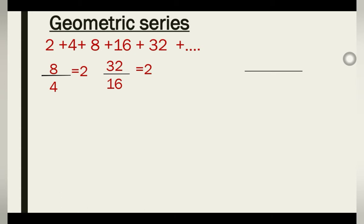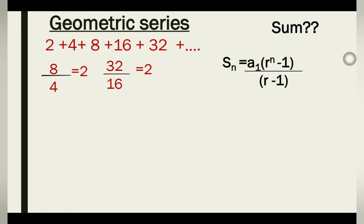The ratio is 2 throughout, so this series is a geometric series. When asked to find the sum of the first n terms of a geometric series, the formula we use is: S_n = a₁ · (r^n − 1) / (r − 1). That is the formula for finding the sum of the first n terms of a geometric series.